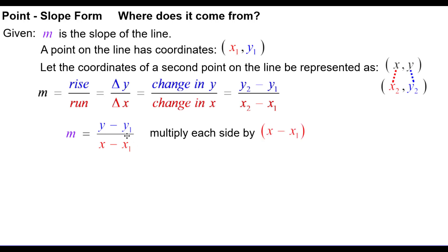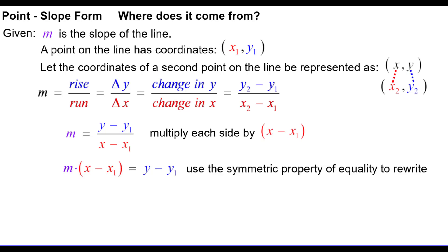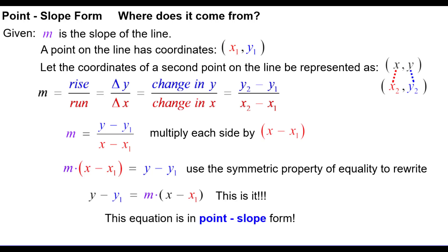We are going to multiply each side by the denominator to clear the fractions — multiply each side by the quantity x minus x sub 1. The left side becomes m times that quantity. On the right side, the numerator and denominator cancel to 1, leaving y minus y sub 1. Using the symmetric property, we rewrite it as: y minus y sub 1 equals m times the quantity x minus x sub 1. This is point-slope form, where m is the slope and x sub 1, y sub 1 is the point the line goes through.